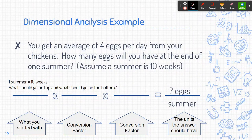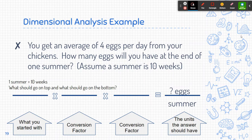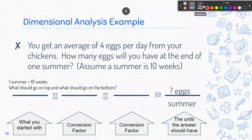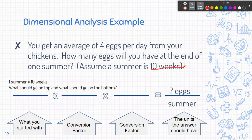So here's an example. I get an average of 4 eggs per day from my chickens. How many eggs will you have at the end of one summer? Okay so let's just say one summer is 10 weeks. I'm just gonna make something up.